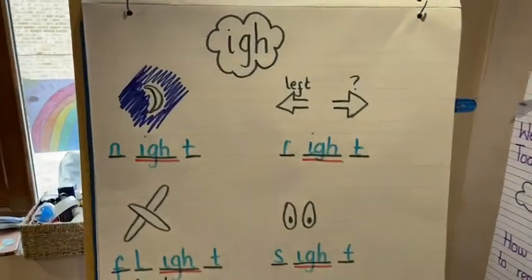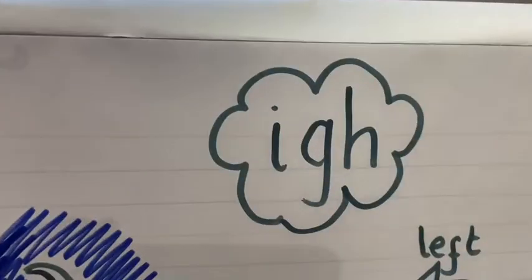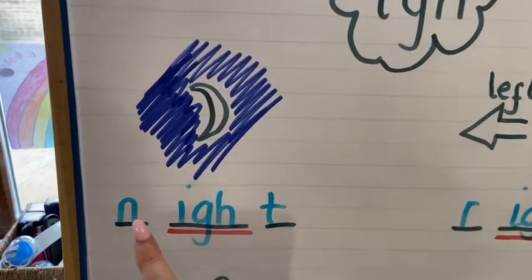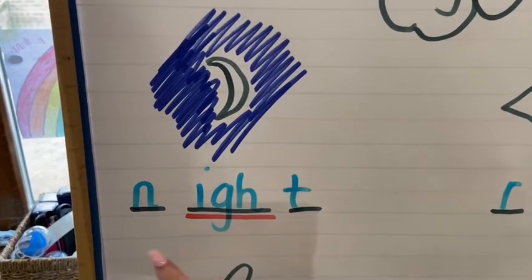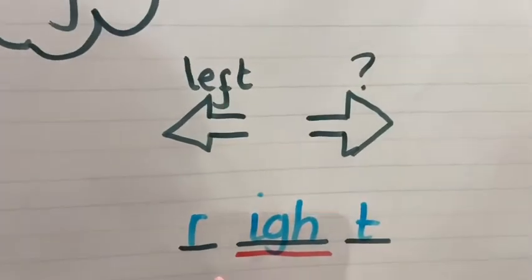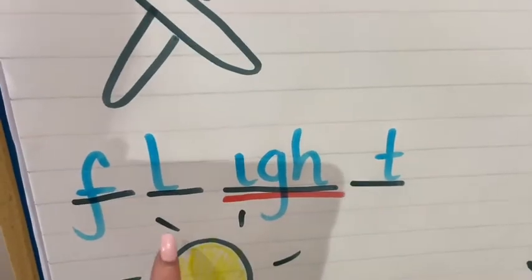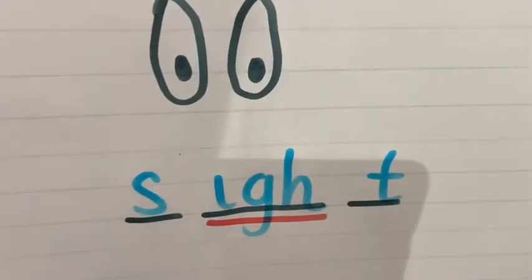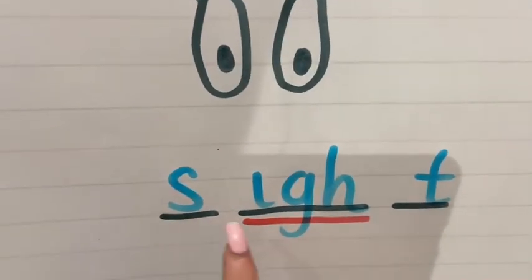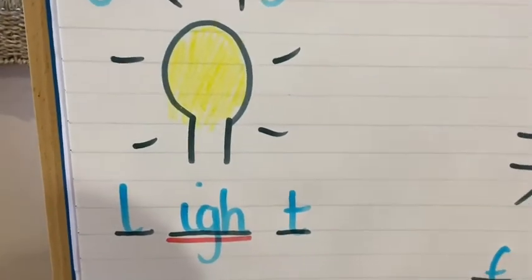Right, I've had a go at filling in my pictures and writing my 'igh' trigraph, and we're going to go through the answers. So I have got: night, n-i-g-h-t, night. I have got: right, r-i-g-h-t, right. I have got: flight, f-l-i-g-h-t, flight. I have got: sight, s-i-g-h-t, sight.